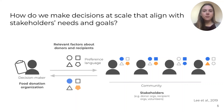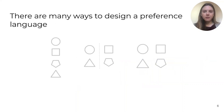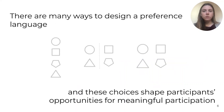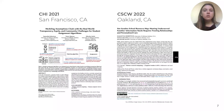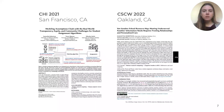What we can see from these examples is that there are many ways to design a preference language, and what we argue in this work is that these choices shape participants' opportunities for meaningful participation in algorithmic decision making. We draw on 27 semi-structured interviews in this work, which we collected over the course of two years of research in two neighboring school districts in San Francisco and Oakland, California. In this paper, we draw on these findings to make a broader case about preference-based systems, but if you're interested in a more in-depth discussion of student assignment algorithms specifically, please check out our prior work at CHI 2021 and CSCW 2022.